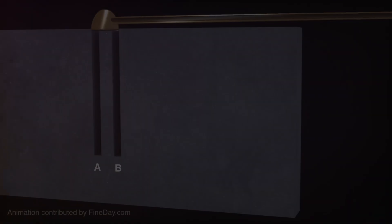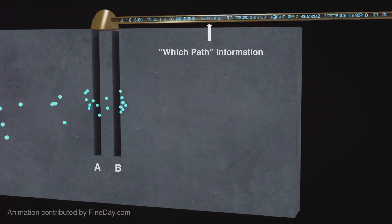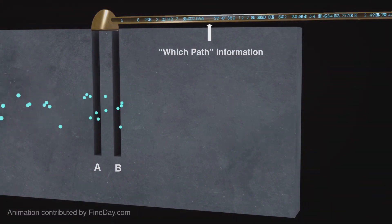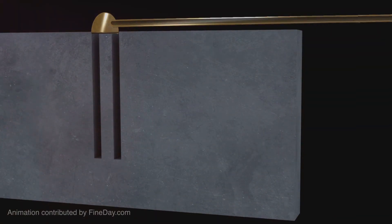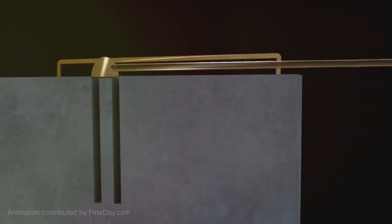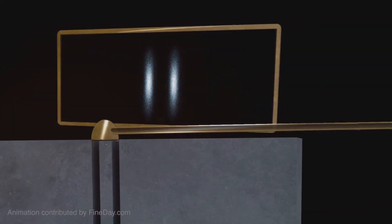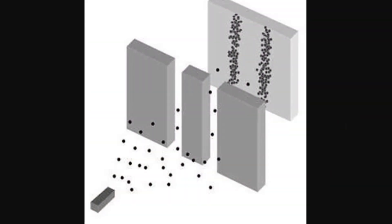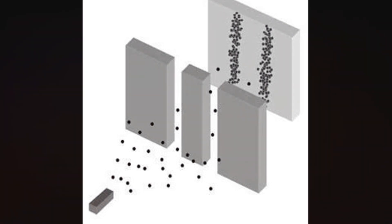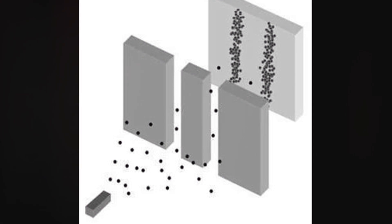But here's where things get really interesting. When we attempt to observe an electron — to pin down its location — something remarkable happens. The wave function, that ethereal cloud of probability, collapses. The electron, as if startled by our gaze, chooses a single position, materializing from the realm of possibilities into the concrete world of measurement. The interference pattern disappears, and the electrons behave like tennis balls once again, even when both slits are open.